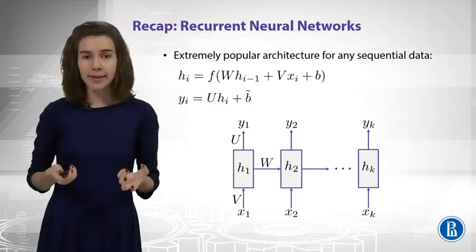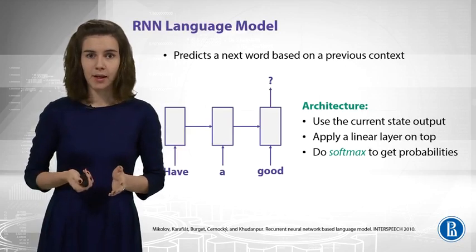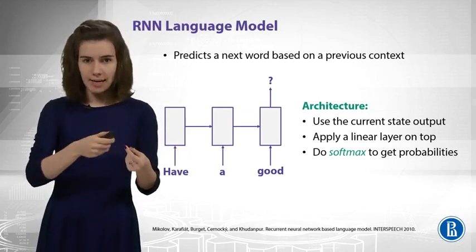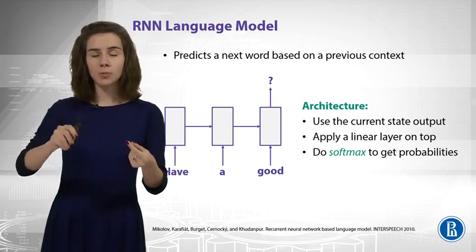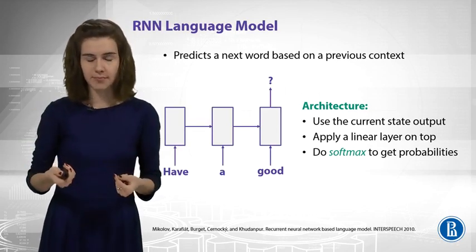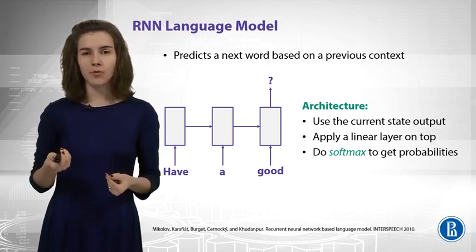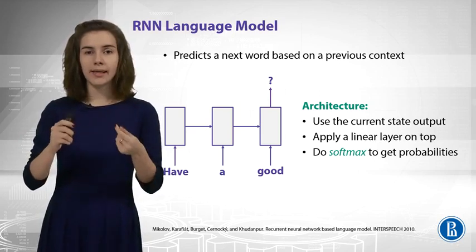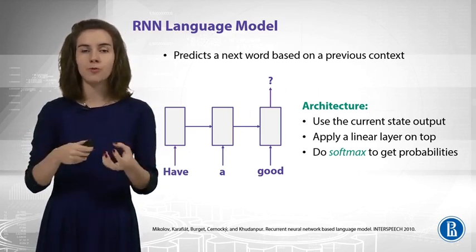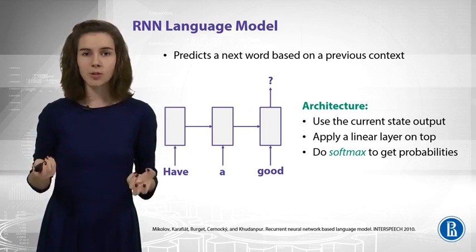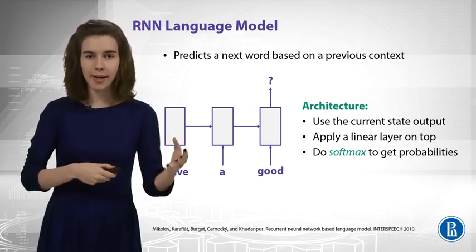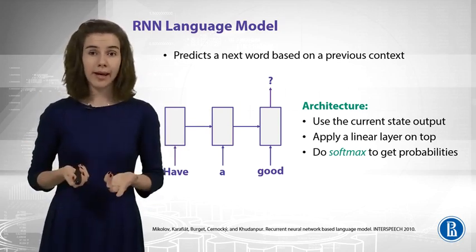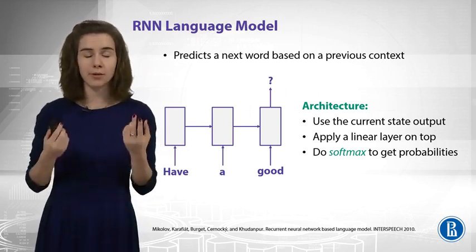How can we apply this network for language modeling? Well, actually, straightforwardly. The input is just some part of our sequence and we need to output the next word of this sequence. The dimension of the U-matrix is the size of the hidden layer by the size of our output vocabulary. We apply softmax and we get our probabilities.